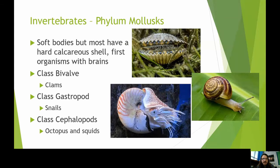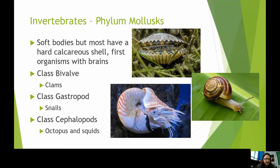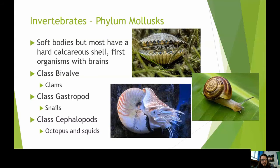Moving up again to mollusks — a phylum, which is just a large classification group in taxonomy. Mollusks have soft bodies; most have a hard calcareous shell made of calcium. We learned in biogeochemical cycles that when these creatures die and sink to the ocean floor, they can form limestone. And mollusks actually have brains — with the exception of clams.